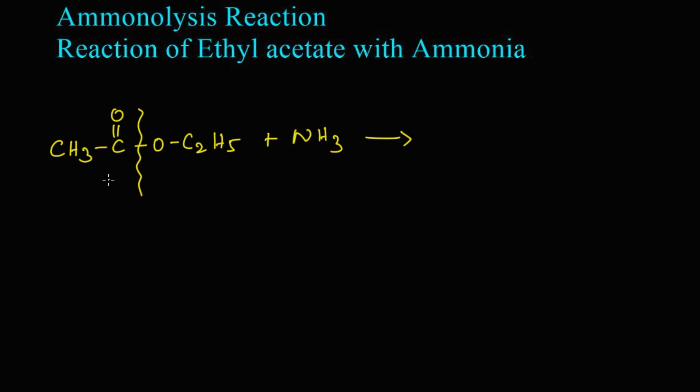Here NH2 will get attached to this CH3CO part and hydrogen to this C2H5O part. So we get CH3C double bond O NH2, this is acetamide.